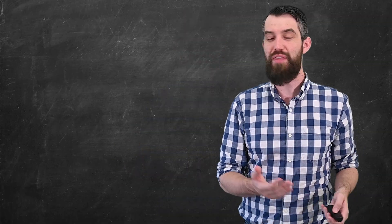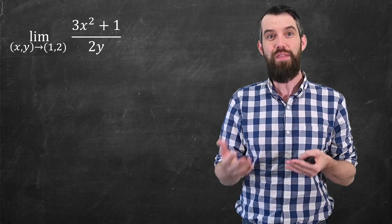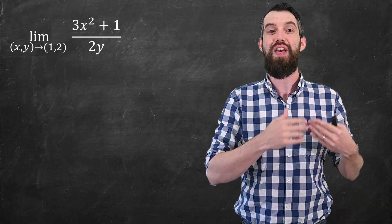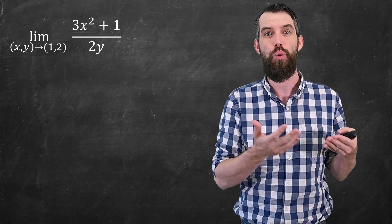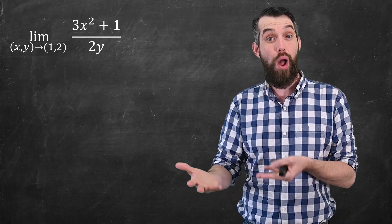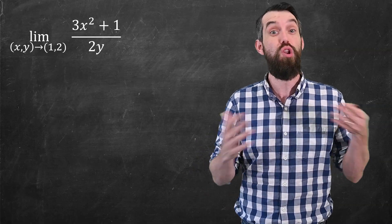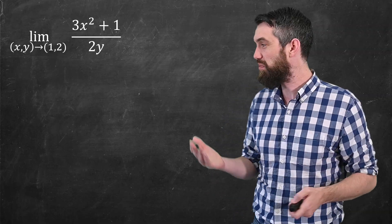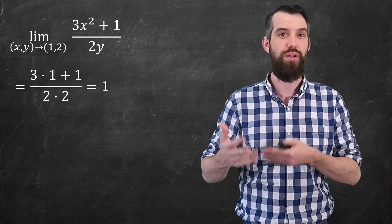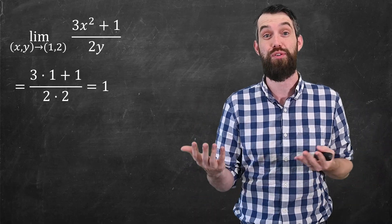Let's begin with one of the easiest examples I can think of — one that doesn't need any algebraic tricks at all, one that we can just substitute the values in. This is a limit of some function, and I want to pay attention to what's underneath the limit sign: x and y, that pair, are going to the point 1, 2. If I look at this function, there is a y in the denominator, which could be problematic if y were zero, but because we're sending x, y to 1, 2, the problem spot in the denominator is nowhere near this point. As a result, we just plug the values in. The answer is 3 times 1 squared plus 1, divided by 2 times 2, which all simplifies to 1.